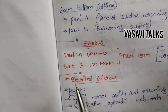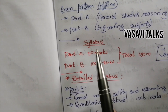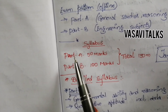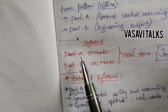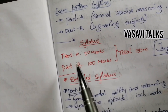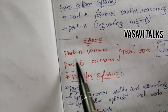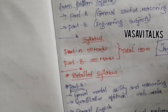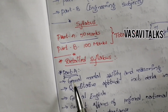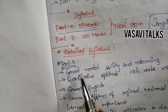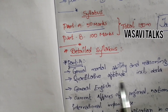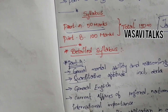In Part A, we will discuss general mental ability and reasoning, and quantitative aptitude including data interpretation. The first topic in Part A is general mental ability and reasoning, and quantitative aptitude including data interpretation. I have two topics.